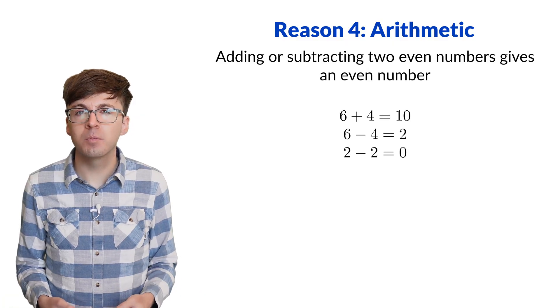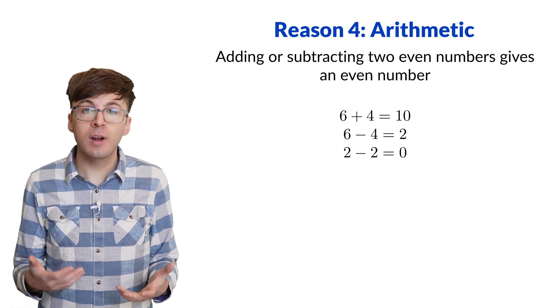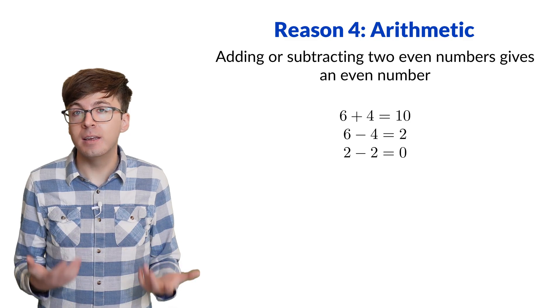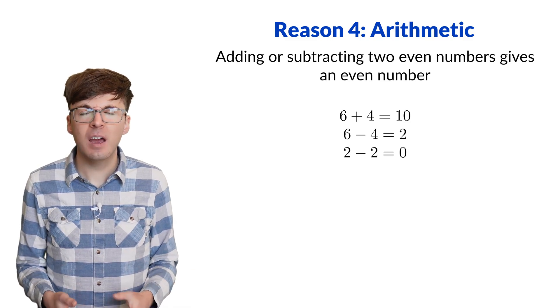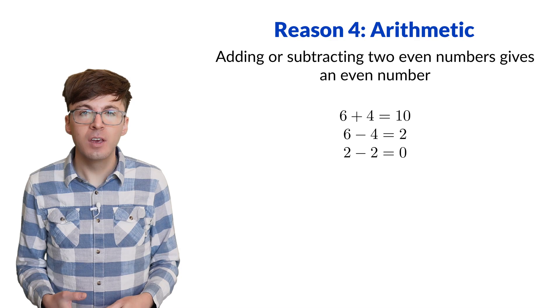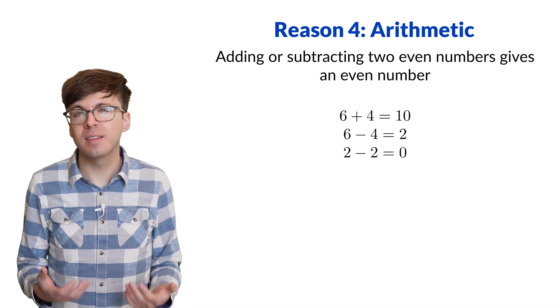Otherwise, a rule would have to be modified to be something like, when we add or subtract two even numbers, we get an even number, or a 0. Having arbitrary exceptions like this would make math less useful and less beautiful.